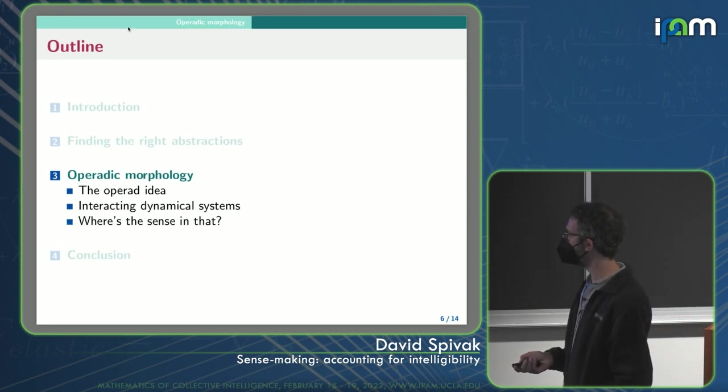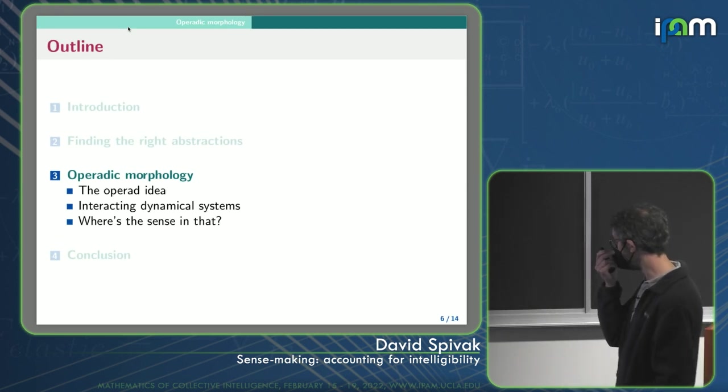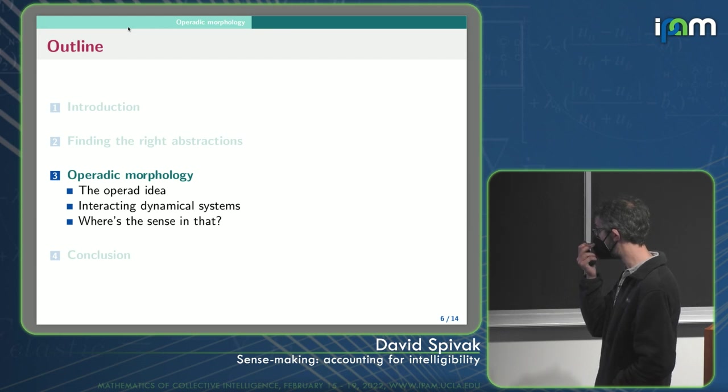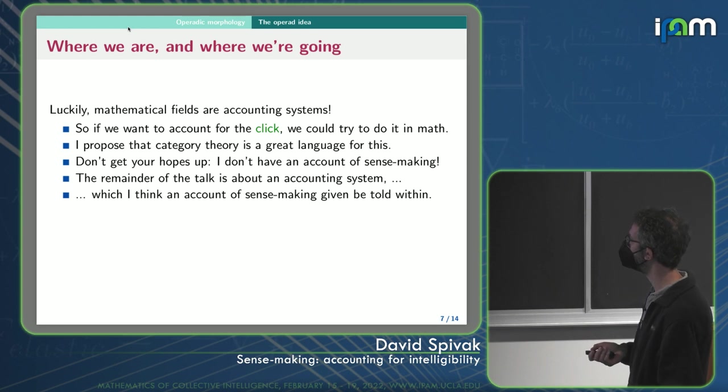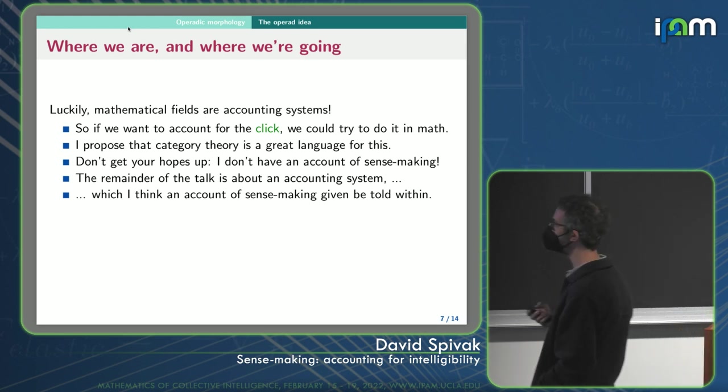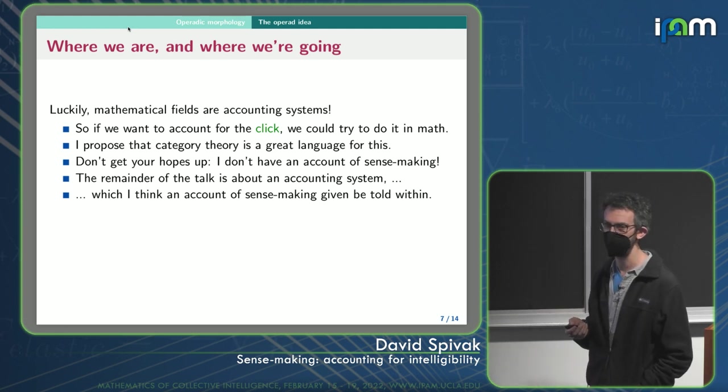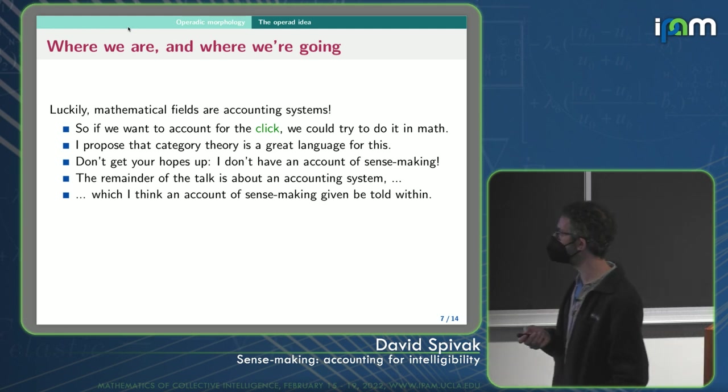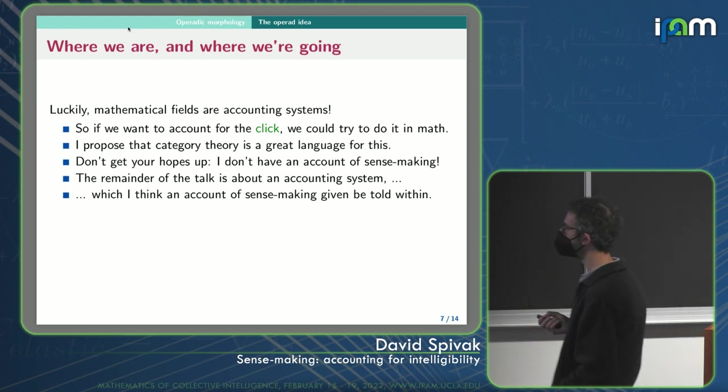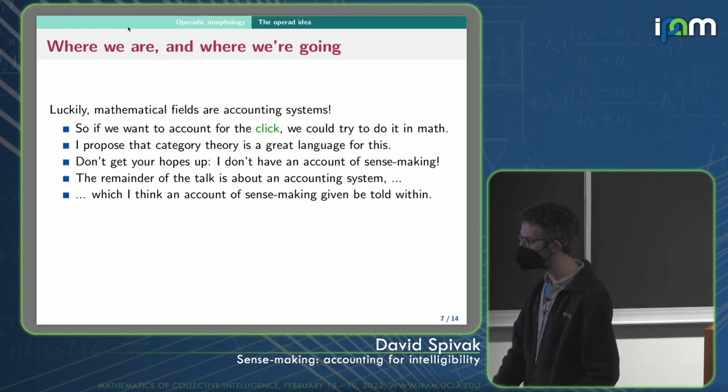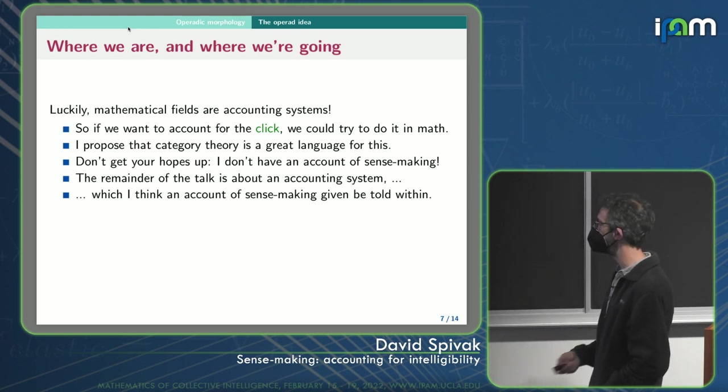Okay, so here's the math part of the talk, which I didn't really focus on too much, but I'm going to just take you through this operad idea and stuff. So, okay, well, if accounting systems are important, and math is accounting systems, I'm not saying all accounting systems are math, otherwise we'd have to have our little amoeba ancestors doing math, but just that mathematical fields are accounting systems, maybe if we want to account for the click, we could at least try to account for sense making within math.